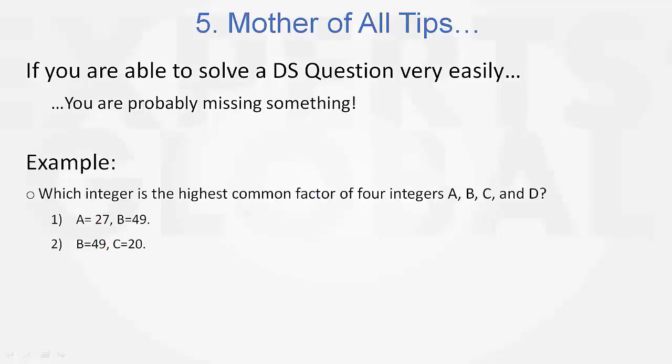Now, most students would think that statement 1 is not sufficient. The question is asking, highest common factor of 4 integers a, b, c, and d, and at the first look, one thinks that c and d are not here in statement 1. So, how can this be sufficient?